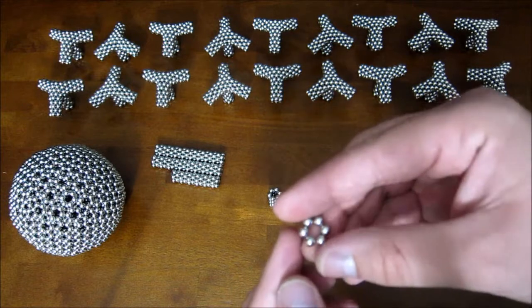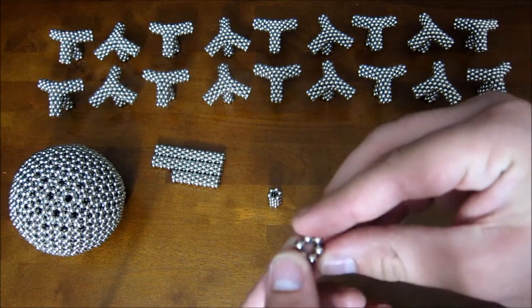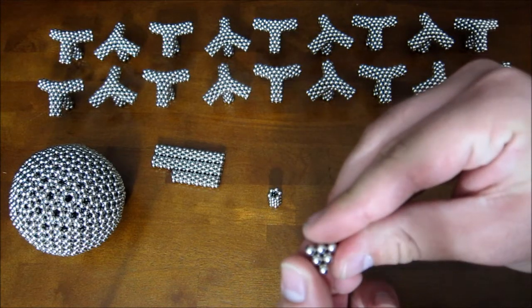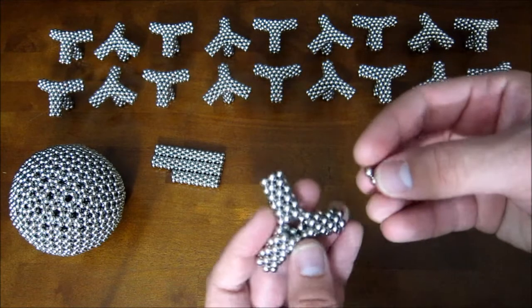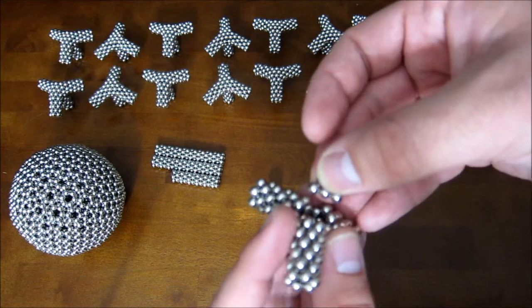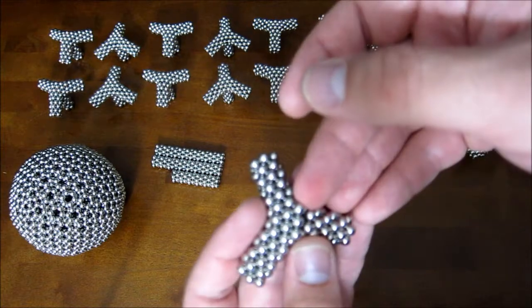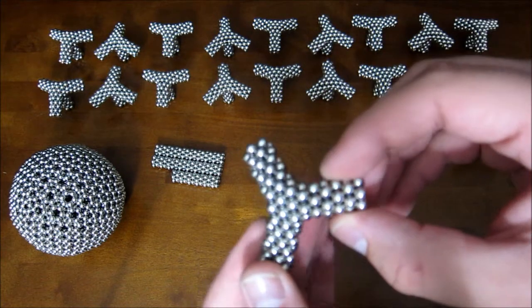Now you take this one little hexagon ring and pinch it into a triangle and you're going to add this down across this top part. Just like that.